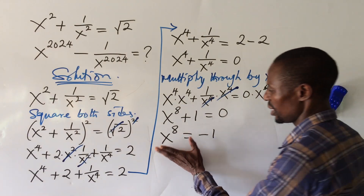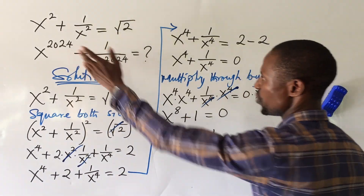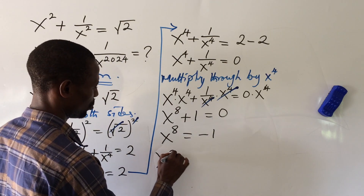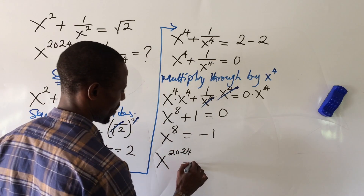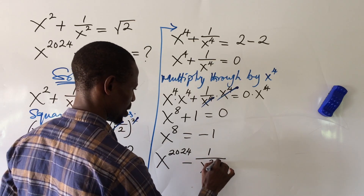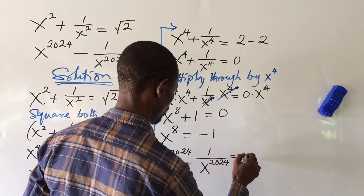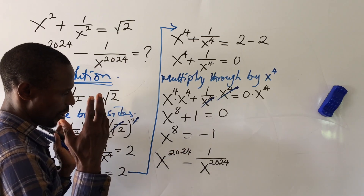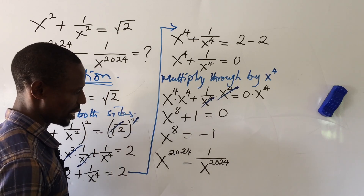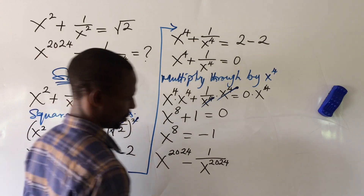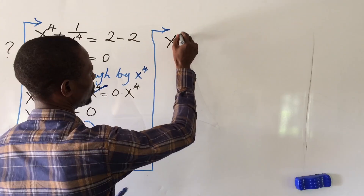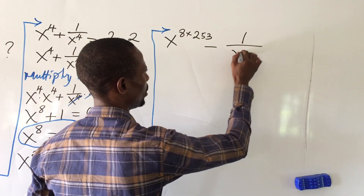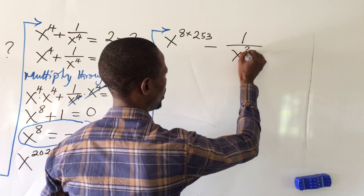Now that we've established s to the power of 8 equals minus 1, let's bring our original expression: s to the power of 2024 minus 1, all over s to the power of 2024. Note that 2024 can be written as 8 times 253.